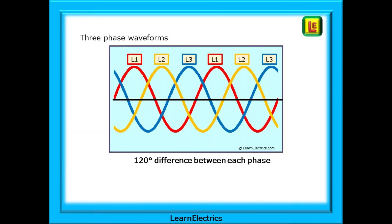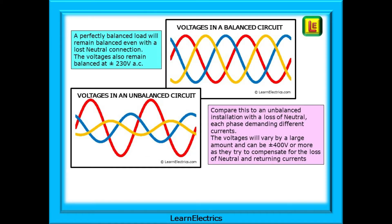A three-phase waveform is shown here. It has three cyclical waveforms, which we've called L1, L2, and L3. They are still at 50 cycles per second, but each phase is 120 degrees offset from the others. The interesting thing with a three-phase circuit is that a perfectly balanced three-phase load will remain balanced even with a lost neutral connection, and the voltages will also remain balanced at 230 volts AC.